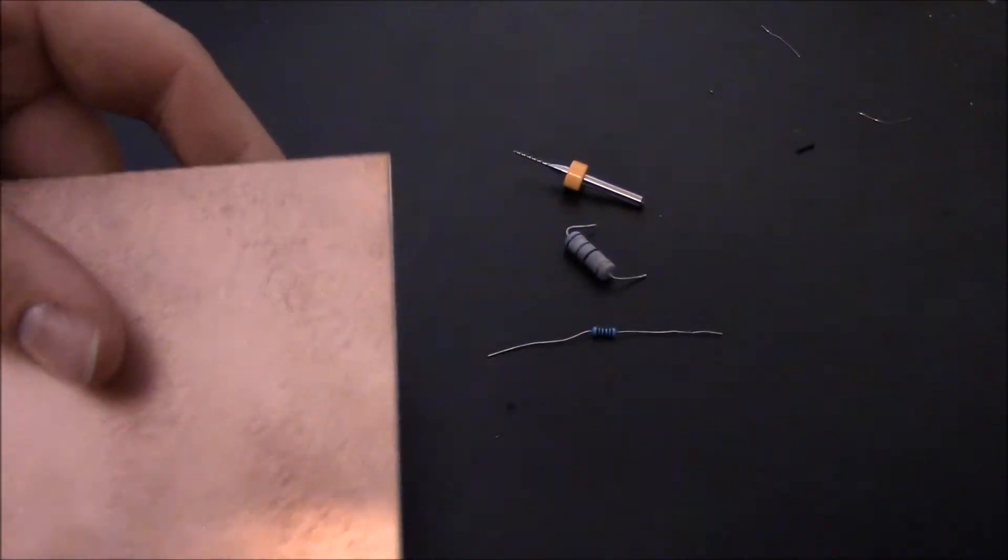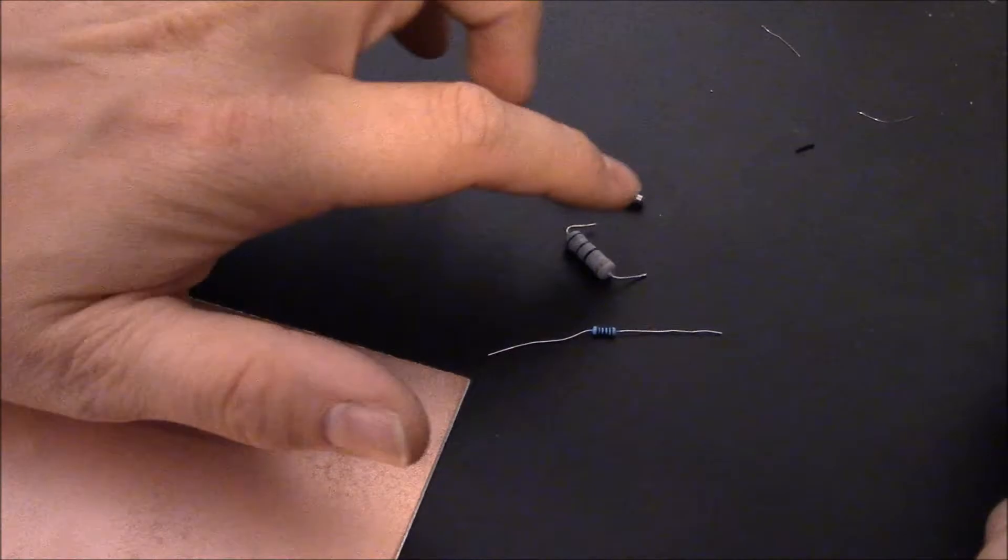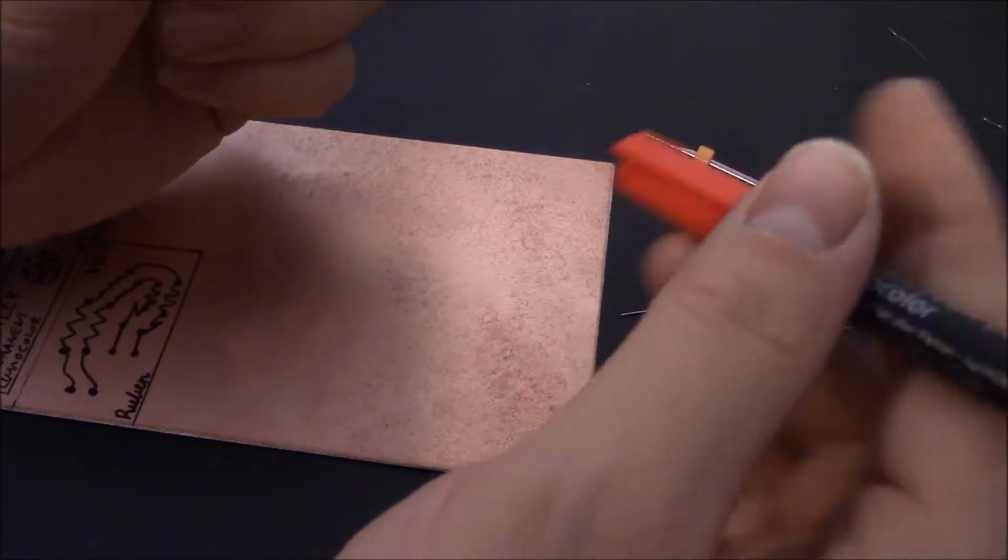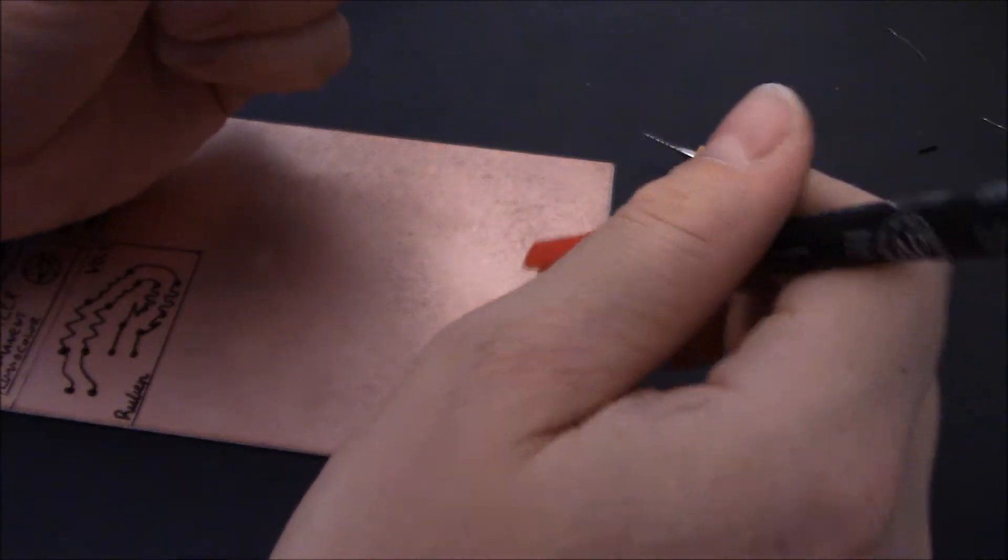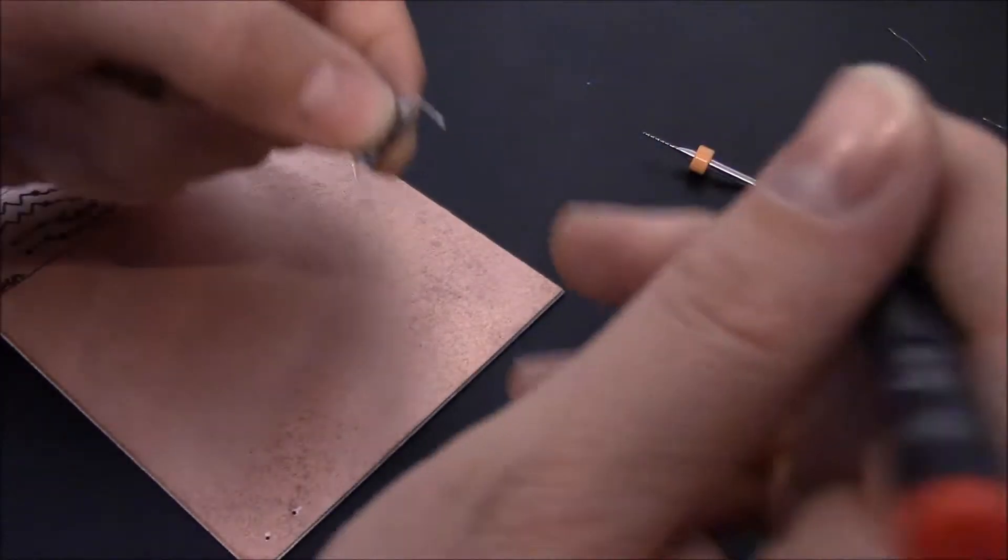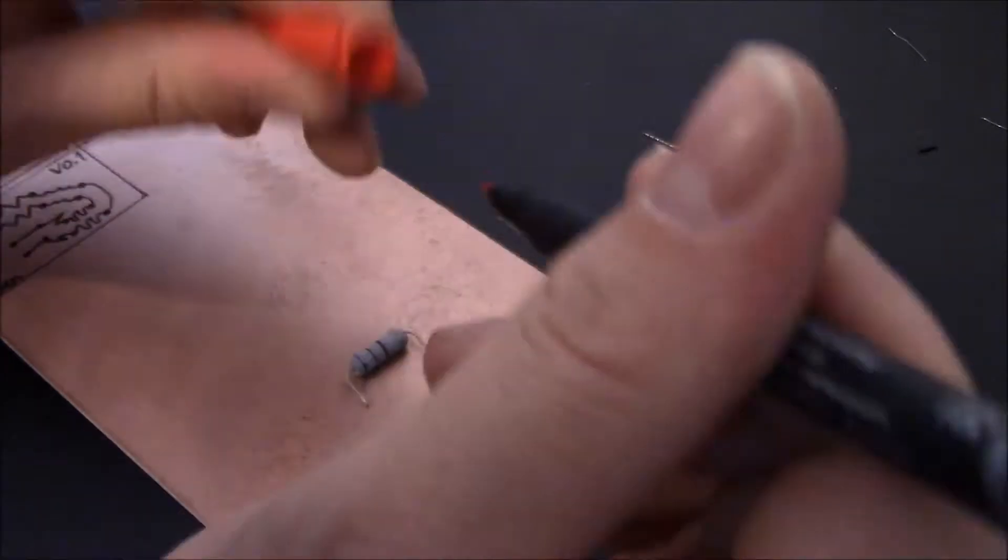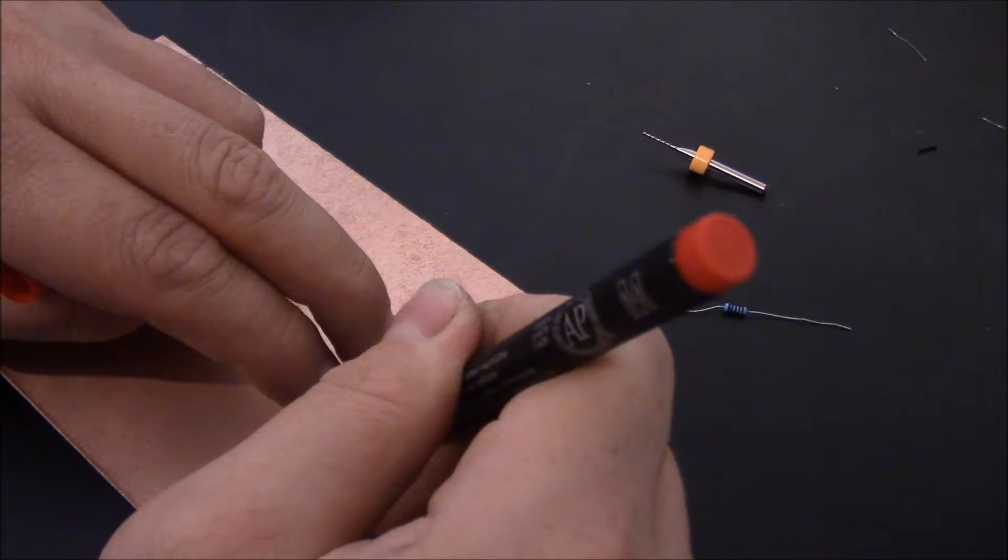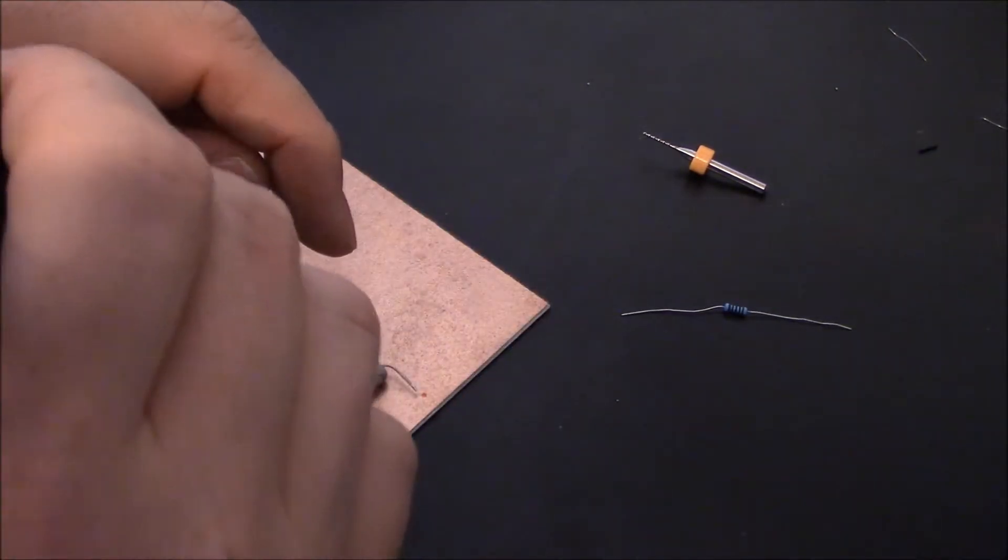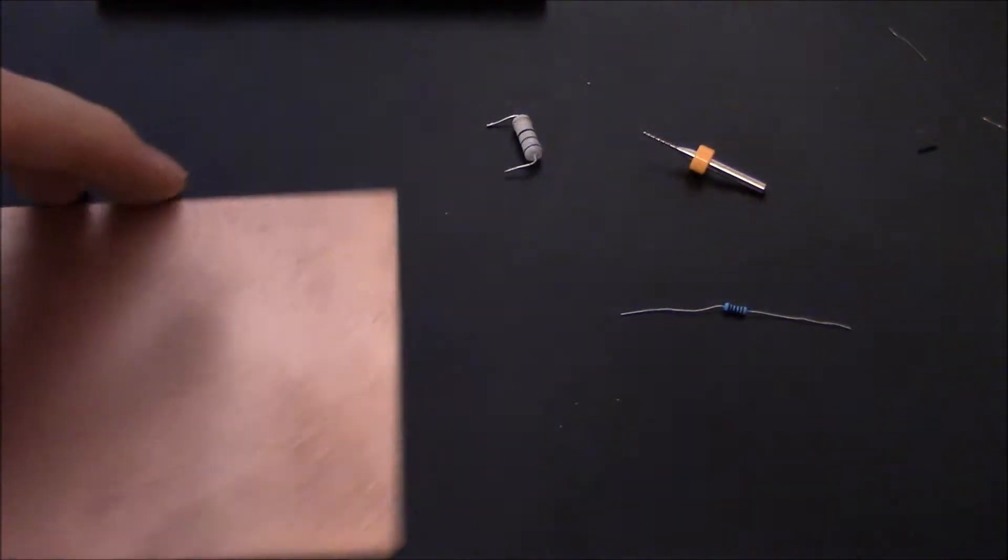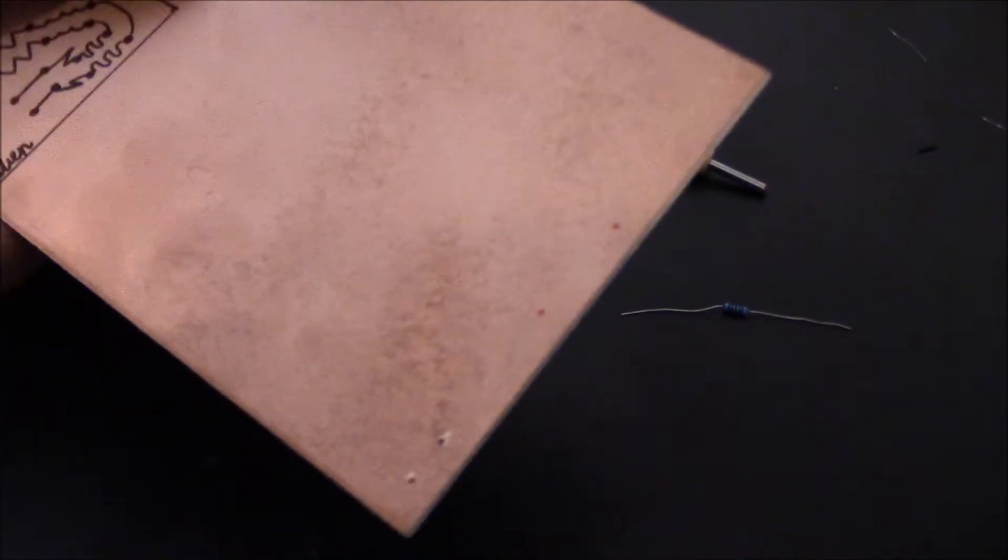I will try to make some holes for this large resistor. I will use this pen to mark on the copper plate where I want to drill the holes for the leads to fit through. Yes, and I want them there and there. So if I drill there it should be just the right space. Let's try and see what happens.